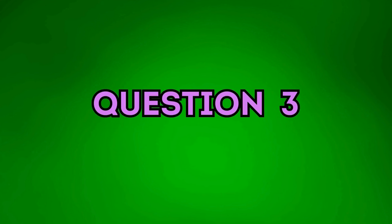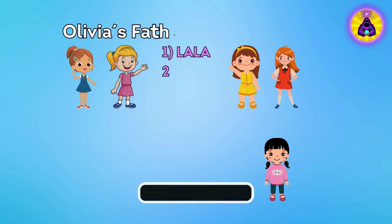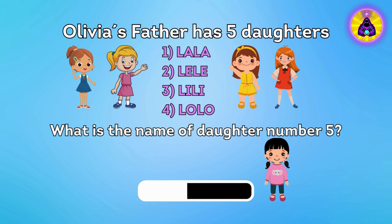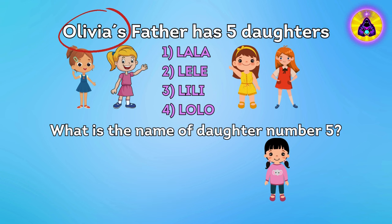Question 3. Olivia's father has five daughters: Lola, Lele, Lily, and Lolo. What is the name of daughter number 5? It's Olivia's father, remember? So daughter number 5 is Olivia.